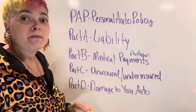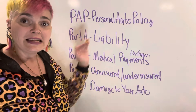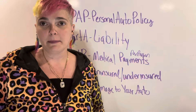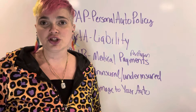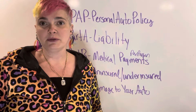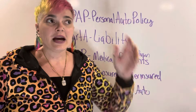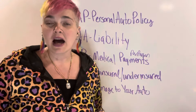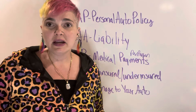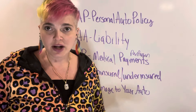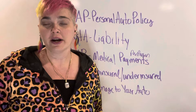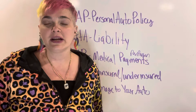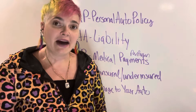It is imperative to memorize at least parts A through D. You should be able to immediately recall: Part A — liability; Part B — med pay; Part C — uninsured/underinsured; Part D — damage to your auto. Say it to yourself over and over again until you have it memorized.